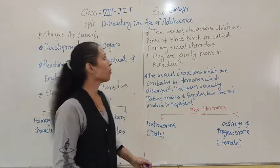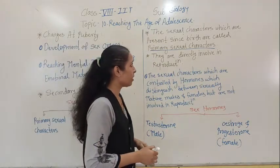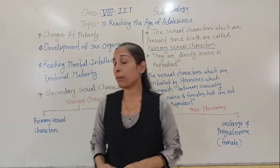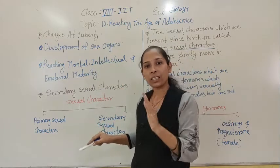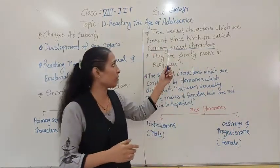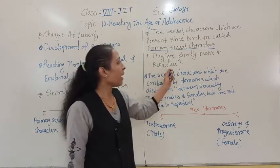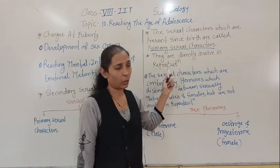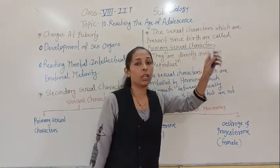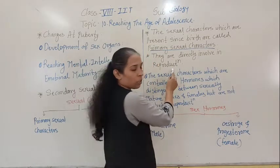First we will discuss primary sexual characters. The sexual characters which are present since birth are called primary sexual characters. For example, all the sex organs are primary sexual characters because they are present since birth — since birth they are present in our body. These primary sexual characters are directly involved in the reproduction process.